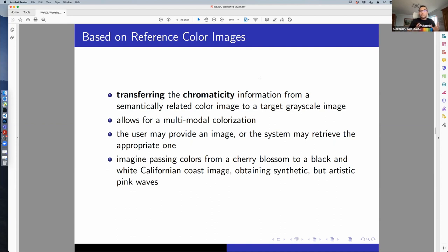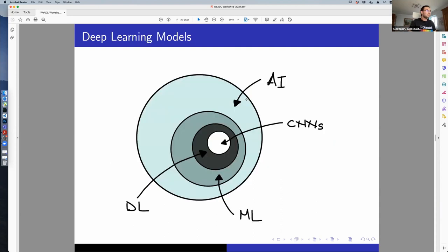The method allows for multi-modal colorization. The idea is that something doesn't have one color and that's it. You can give it a blue Honda, a gray Hyundai, and so on. The user may provide these images or these images can be obtained. You can give the grayscale image and some algorithms will say, okay, this is the most appropriate image. I think use it or don't. It's up to you.